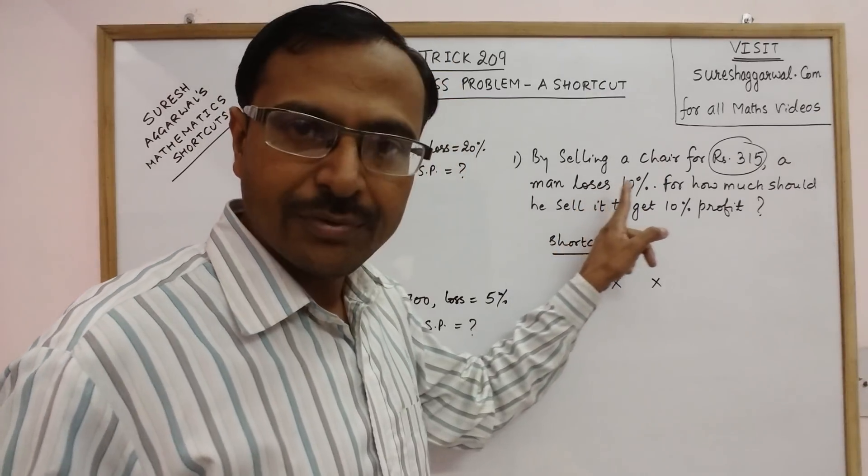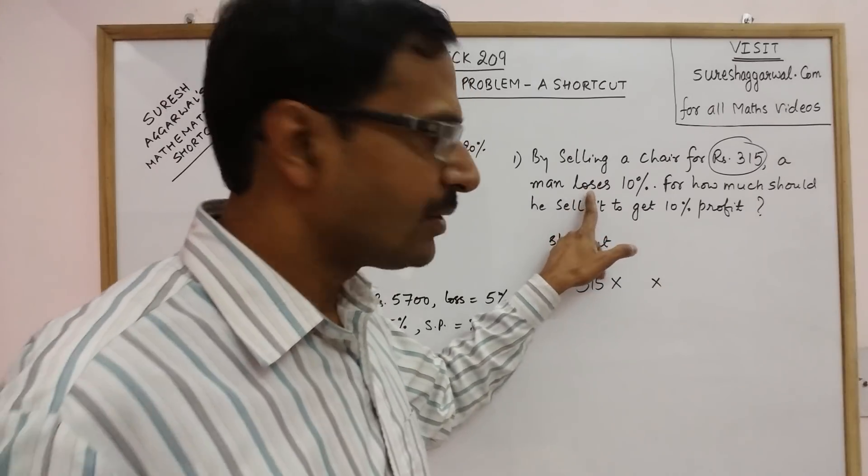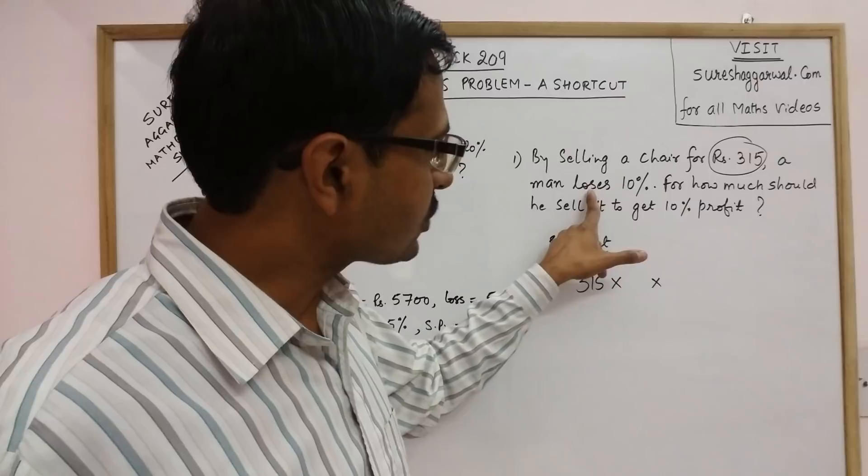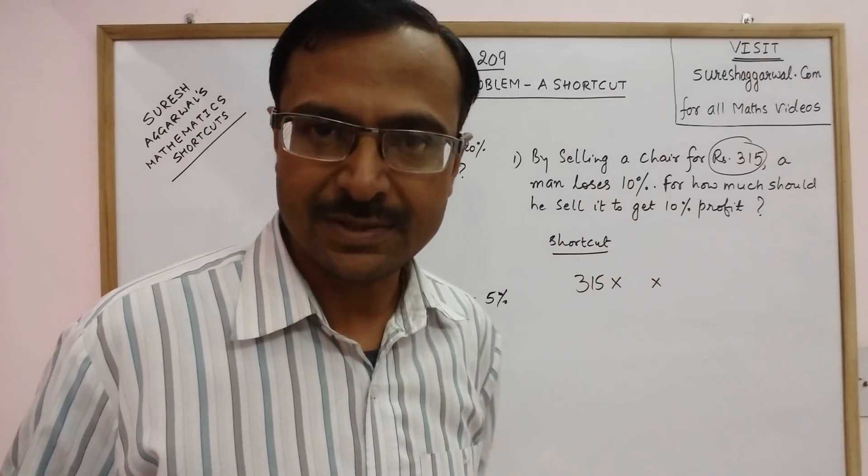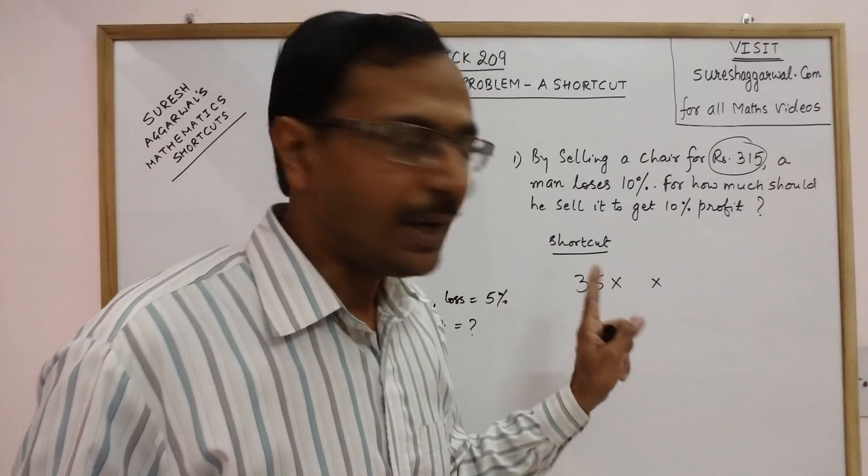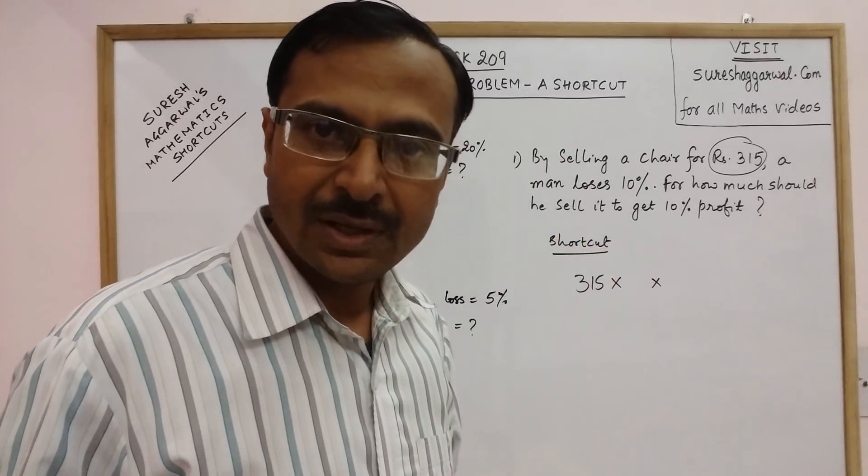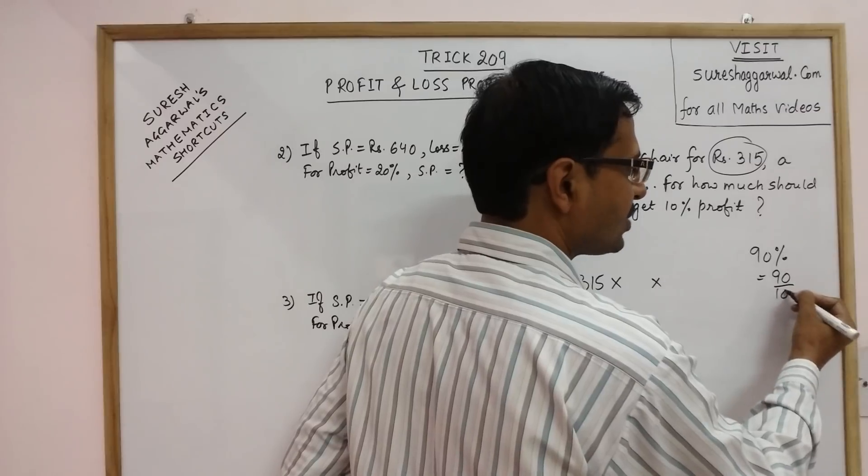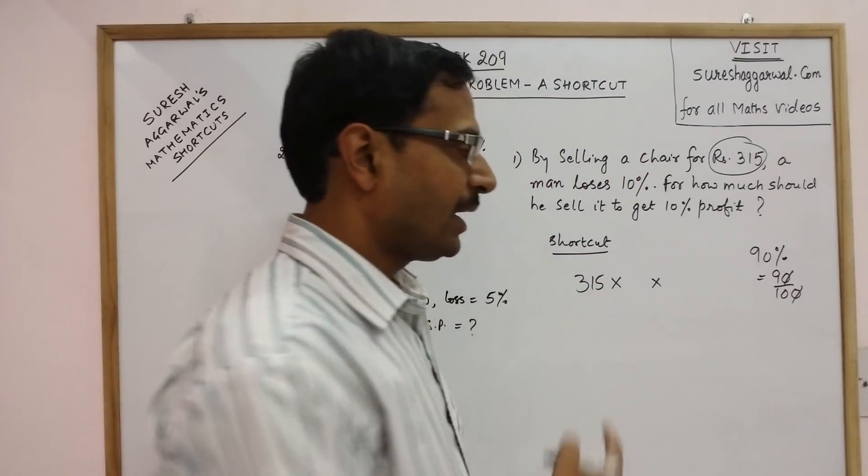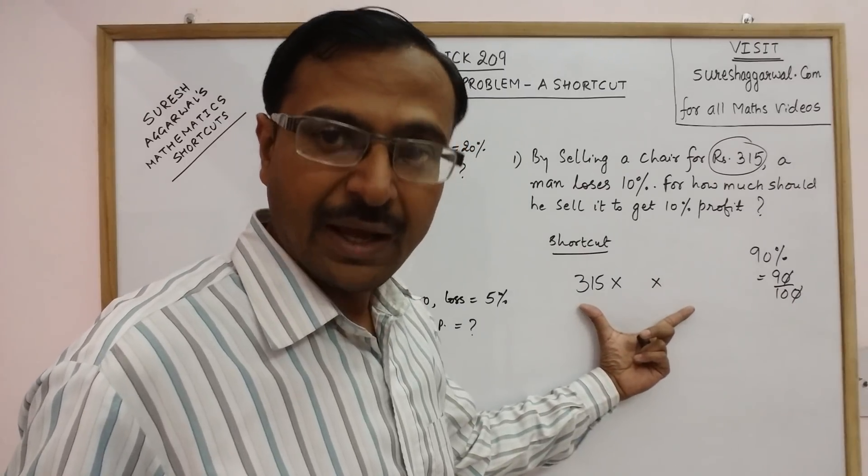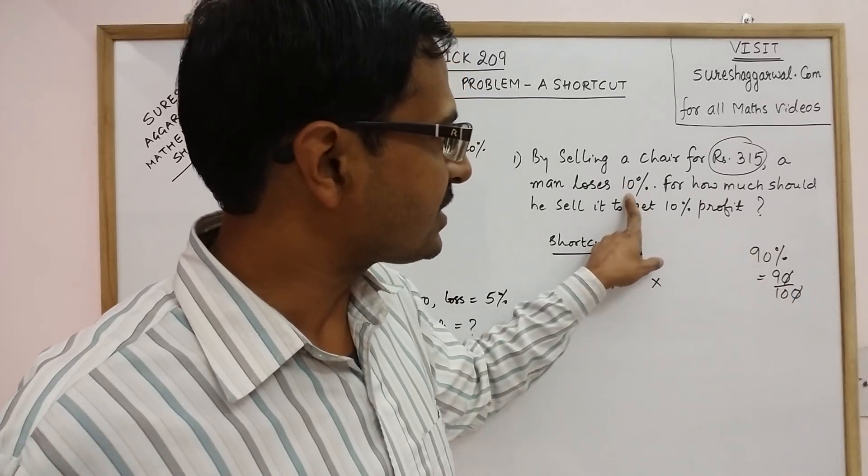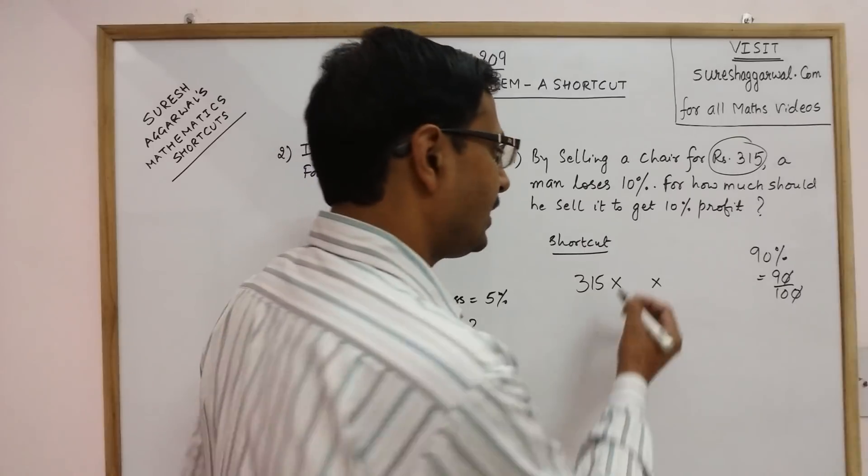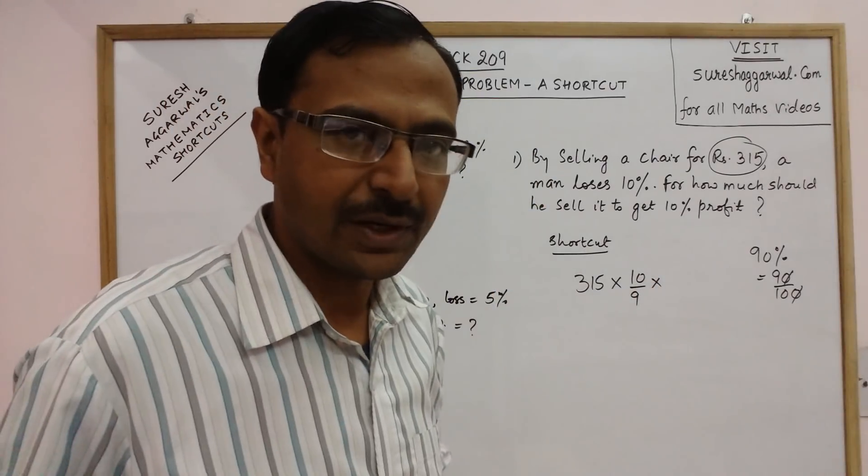Second, for loss of 10%, always subtract loss from 100 and whenever you have profit, always add it to 100. So loss of 10% means 100 minus 10 equals 90%. Converting 90% into fraction gives 9 upon 10. For loss, we take the reciprocal, so we get 10 upon 9 as the second part of our answer.